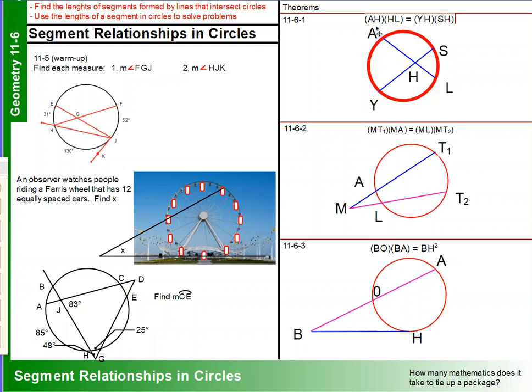So, like here, we have AH times HL, and that should equal YH times SH. Now, the secant-secant theorem is just a little bit different in that we are going to be multiplying the overall length, the M to T1, and we're going to multiply that overall length by the length of the secant that is on the exterior of the circle, MA. And that product is going to equal the product of the entire secant, MT2, times ML, the short part.